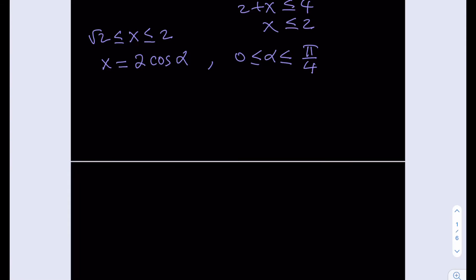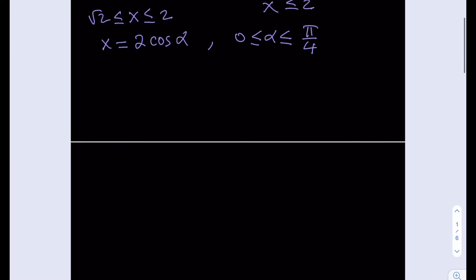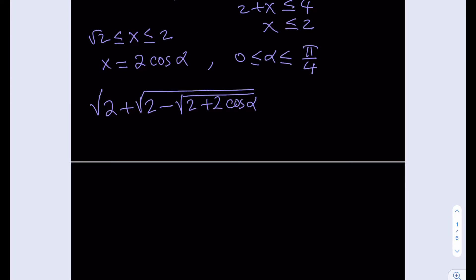We're going to substitute this value for x, and we get the square root of 2 plus the square root of 2 minus the square root of 2 plus 2 cosine alpha. We're going to have a lot of radicals here, and we're going to use the double angle formulas to reduce them.